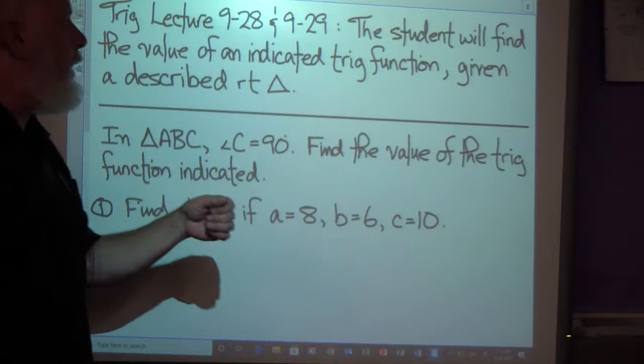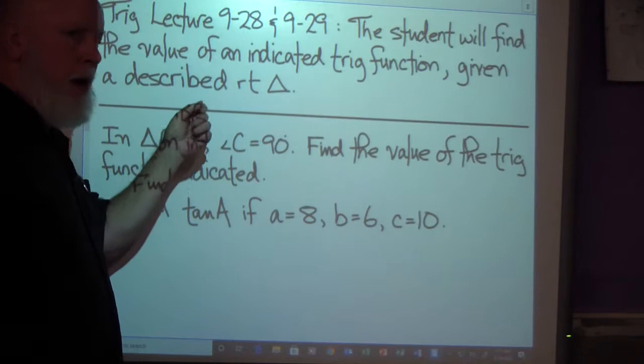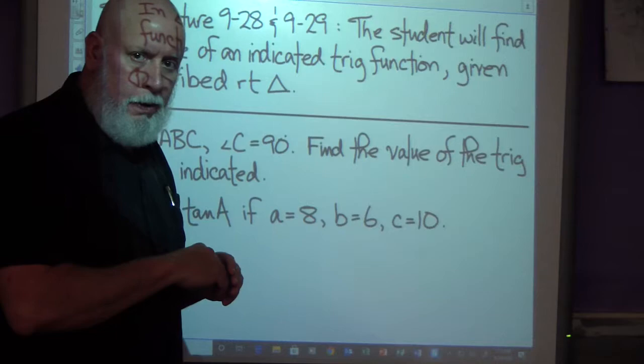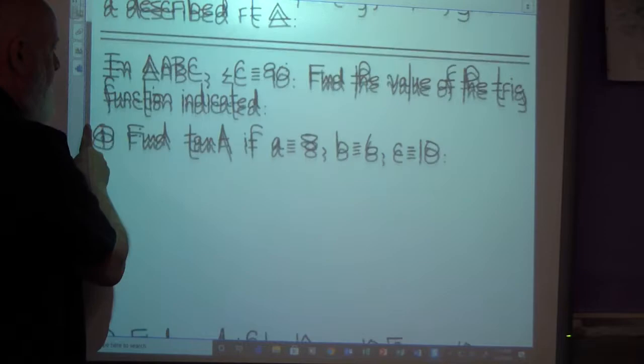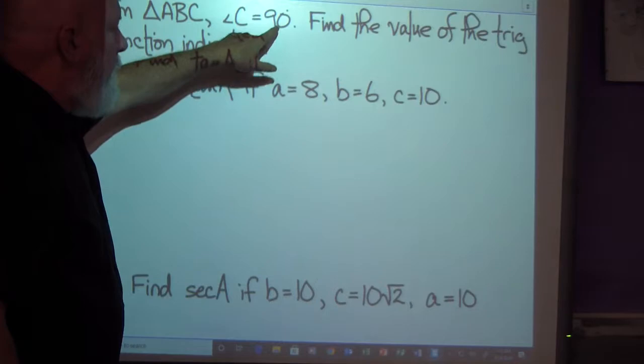Alright, let's take a look here. We've got trig lecture 928 and 929. The student will find the value of an indicated trig function given a described right triangle. Now we've done this in the past but we were given a figure of the right triangle, and this time we're just going to be given a description of it and we're going to try to find the value of a trig function that's indicated. So here's what it's going to look like and hopefully this will make sense. I'm sure you guys will get it.